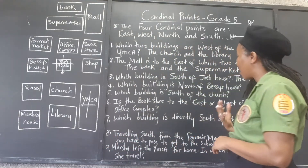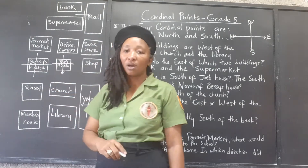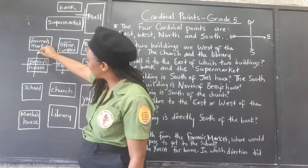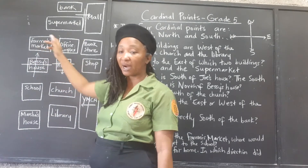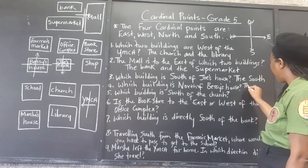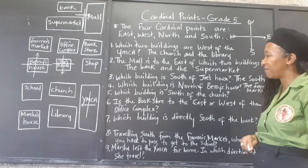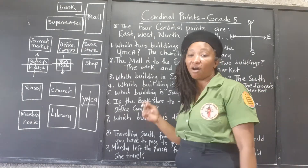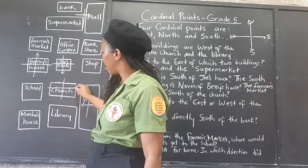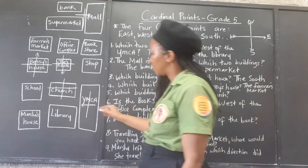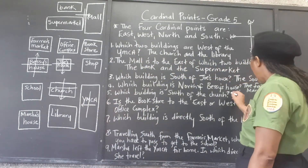Number four: which building is north of Bessie's house? This is Bessie's house — it's the point of reference. We draw our cardinal points, and north is going up from center. Which building is north of Bessie's house? That would be the farmer's market. The farmer's market is north of Bessie's house. Number five: which building is south of the church? The church is our point of reference. South is going down from center, and south of the church is the library. The library is south of the church.